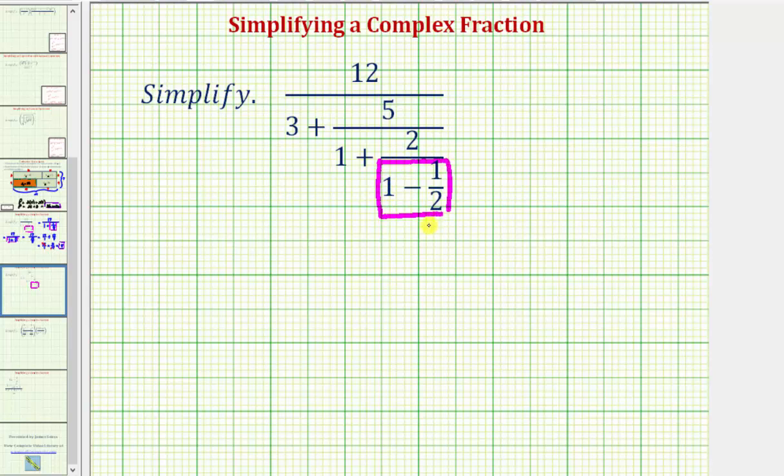We know one minus one-half equals one-half, so we can rewrite this as 12 all over 3 plus 5 all over 1 plus 2 over—again, one minus one-half is one-half.